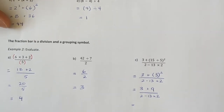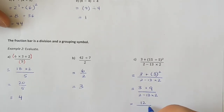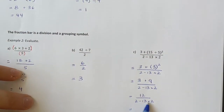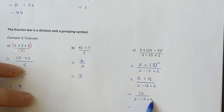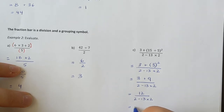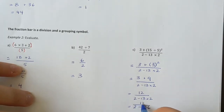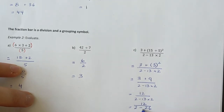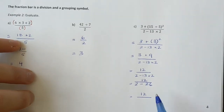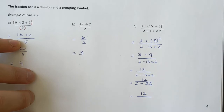I can now perform the addition: 3 plus 9 is 12, over 2 minus 13 times 2. Now I look at the denominator: 2 minus 13 times 2. Remember multiplication comes before subtraction, so this becomes 2 minus 26 — and 13 times 2 is 26. There's still 12 on top. 2 minus 26: thinking about the number line, I have positive 2 and go back 26 spaces, leaving me with negative 24.